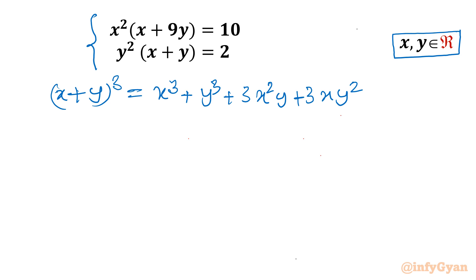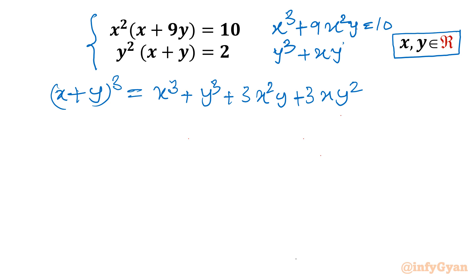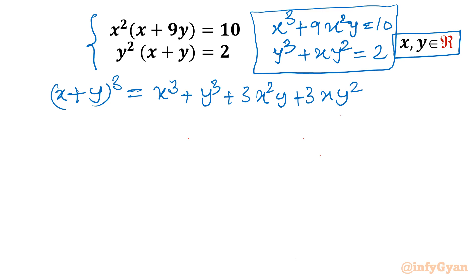Writing equation 1: x³ + 9x²y = 10. And equation 2: y³ + xy² = 2. Now you can see this system is almost matching with the right-hand side of the cubic identity, but the only difference is the multipliers are not the same.